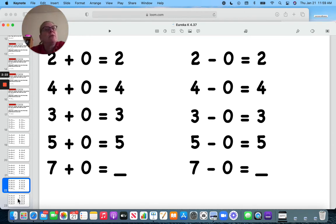You have seven M&Ms and you don't get any more. You still have seven. And if you have seven M&Ms and you don't eat any, you still have seven. So seven plus zero is seven. Seven minus zero is seven. Whenever we add or subtract with zero, our number stays the same.